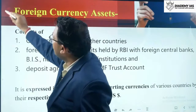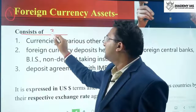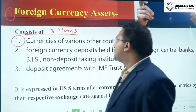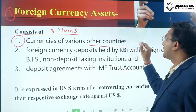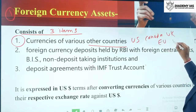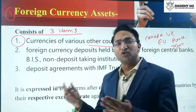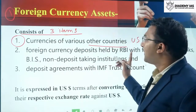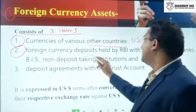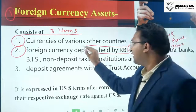The first item is foreign currency assets. This consists of three items. First, the currencies of various other countries — US, Canada, UK, European Union, China, Japan, Brazil, Australia, New Zealand, South Africa, and so on — all countries except India. Second, foreign currency deposits held by RBI.